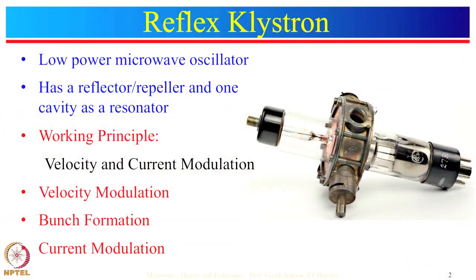Today I will discuss reflex klystron and travelling wave tubes. Let us begin with reflex klystron. It is a low power microwave oscillator. To design an oscillator, the first thing we need to know is how oscillations are generated. The answer is that we need to give positive feedback from output to input such that the loop gain is unity. For a klystron, if a fraction of output power is fed back to the input cavity such that the loop gain magnitude is 1 and the feedback path phase shift is 2π or a multiple of 2π, then the klystron will oscillate.